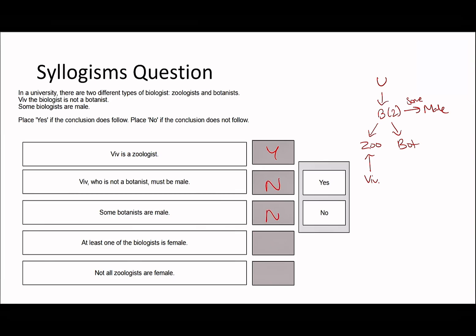Some botanists are male — once again we don't know, because it could be that all the zoologists are the ones that are male and there are no female botanists. Creating the hypothetical. At least one of the biologists is female — yes, because 'some' represents 2 to 99, so there must be at least one biologist that's female. Not all zoologists are female — once again we don't know, because all the zoologists could be female, or all could be male, and the botanists female, or vice versa. There's not enough information to conclude that.